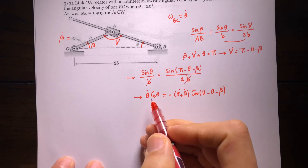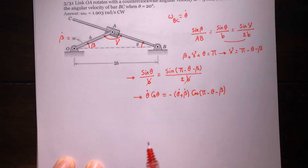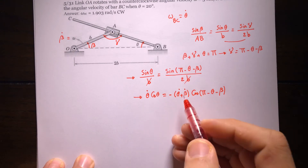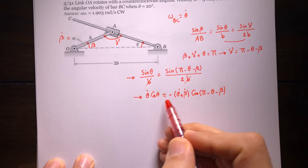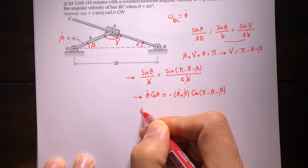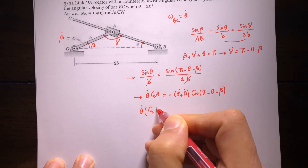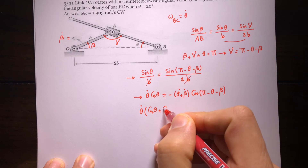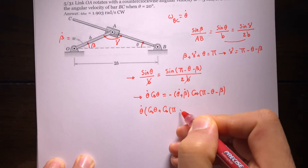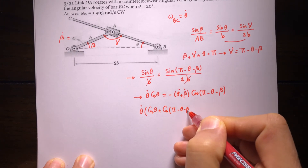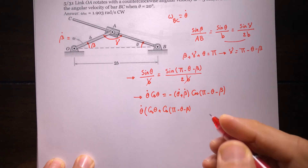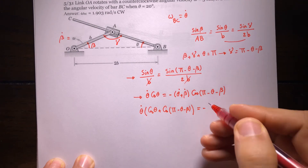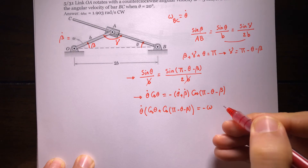Now substitute beta-dot equals omega. Bringing all the theta-dot terms to one side: theta-dot times [cosine of theta plus cosine of (pi minus theta minus beta)] equals negative omega times cosine of (pi minus theta minus beta).